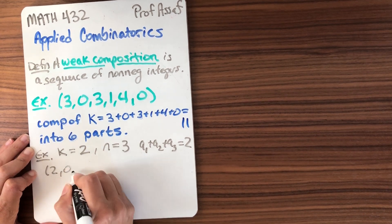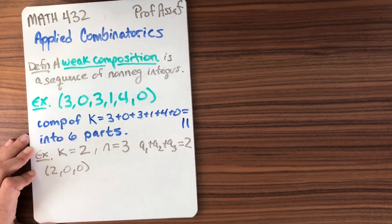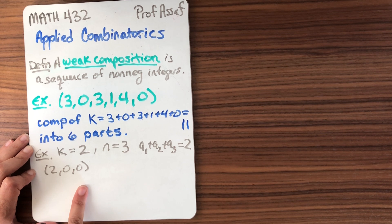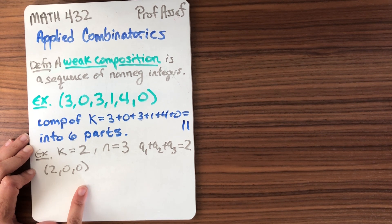Well what can I have? I could have 2, 0, 0. I like to generate things lexicographically. Doing it in a systematic order makes sure that I get them all and it also shows me a little bit about the structure of these combinatorial objects.